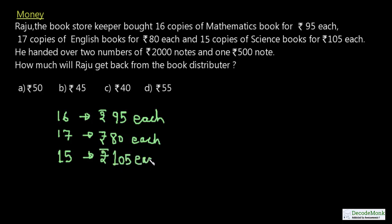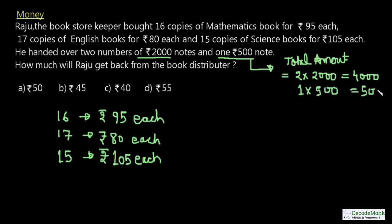He then handed over two ₹2000 notes and one ₹500 note. The total amount handed over to the storekeeper is 2×2000 = 4000, plus 1×500 = 500. Adding these gives us ₹4500 total.